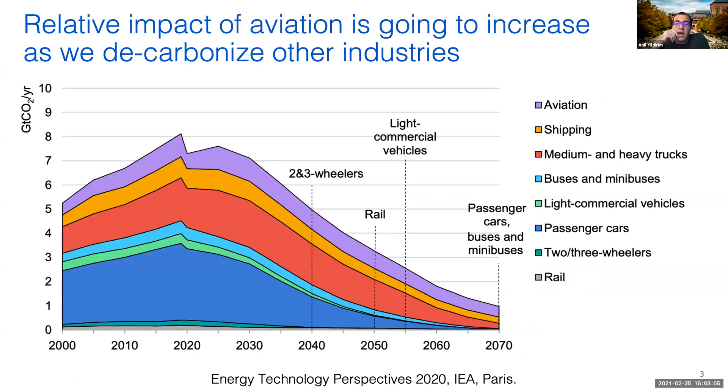This graph here shows the outlook on emission sources from transportation in general. The purple area on top represents emissions from aviation, and while its absolute magnitude does not change much, its relative impact is going to increase as we decarbonize other industries. This stresses the importance of developing sustainable alternatives for long-range air travel.